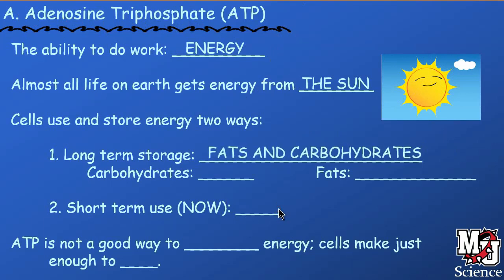Cells themselves use and store energy in two different ways. Long-term storage involves fats and carbohydrates, as we've talked about in the macromolecules chapter. Fats are for long-term storage and carbohydrates are for short term. For example, if you want to run a marathon, you might the night before consume some pasta, because in the next couple of hours you can use those carbohydrates. Fats tend to be for longer term — even permanent — like bears fattening up before hibernating for winter.